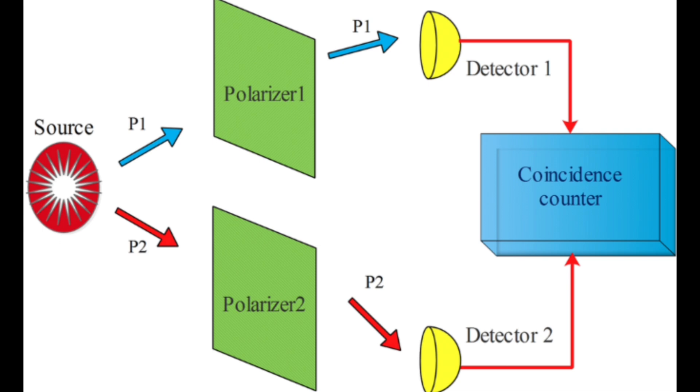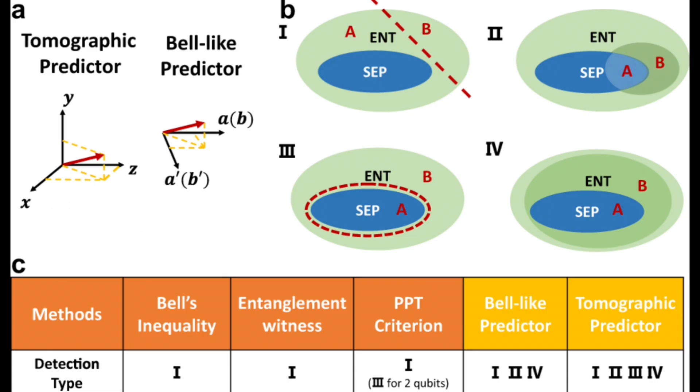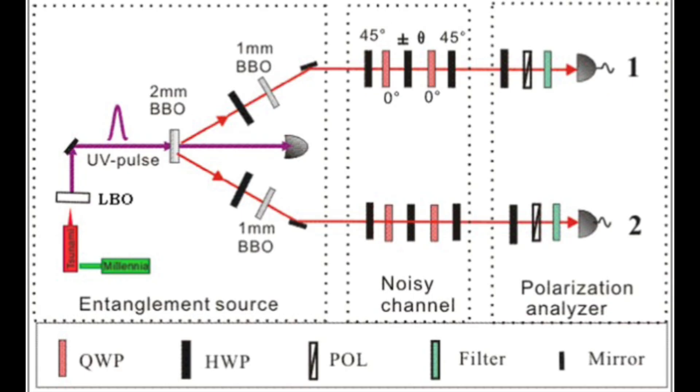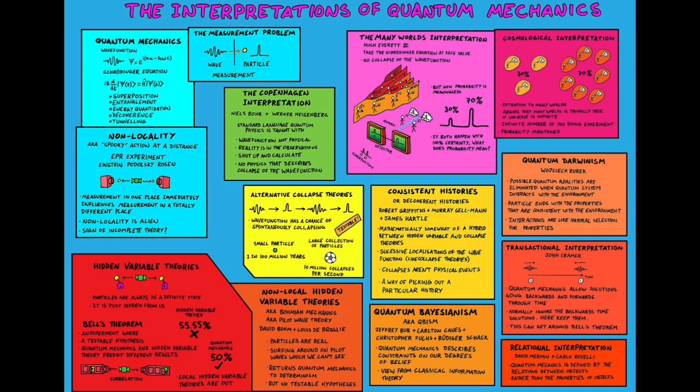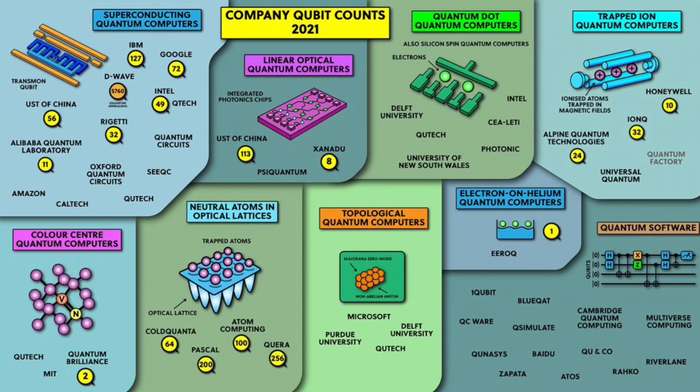Quantum Mechanics and Gravity. Quantum mechanics is also considered incomplete in the sense that it doesn't integrate with general relativity, the theory that describes gravity. Quantum mechanics works well for describing the very small, while general relativity accurately describes large-scale phenomena. However, these theories contradict each other in certain conditions—e.g., black holes, the early universe—leading many to conclude that quantum mechanics alone doesn't fully explain the structure of the universe.